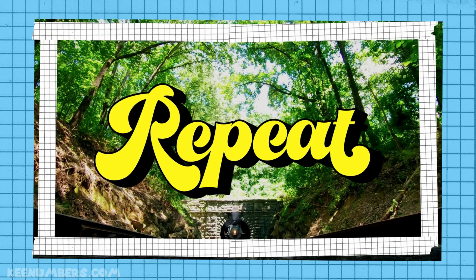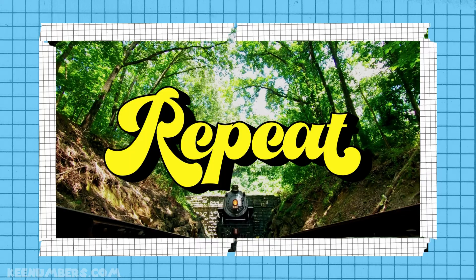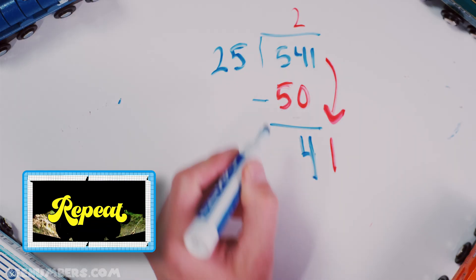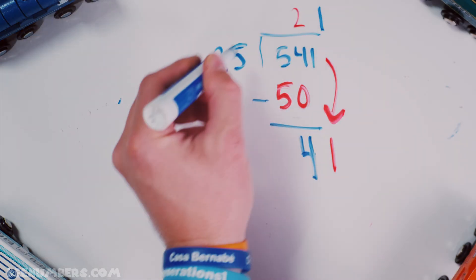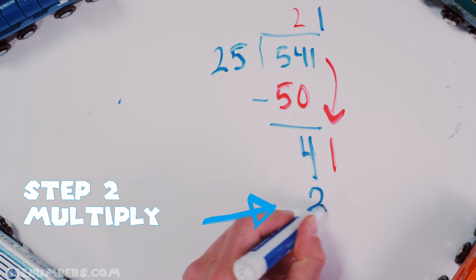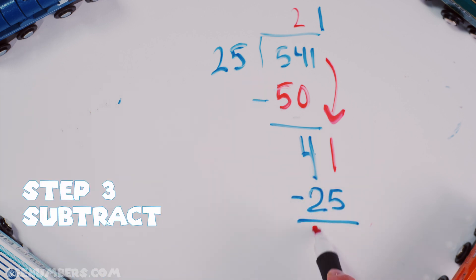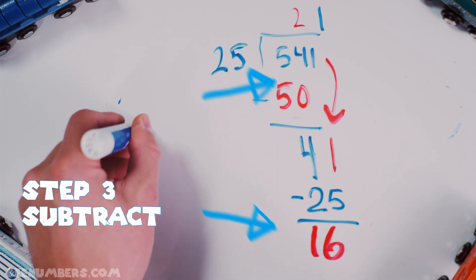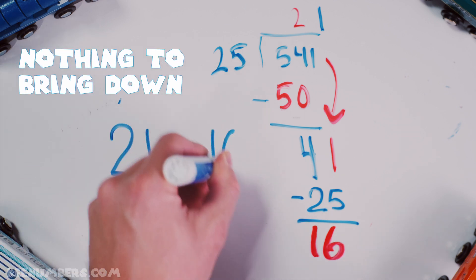Or bring it down. Now, how many times does 25 going to 41? Just one time. That's easy to see. Then you're gonna multiply. You're gonna have 25. Step 3, you're gonna subtract. And what's left over? 16. And so, this is why you have 21 with the remainder of 16.